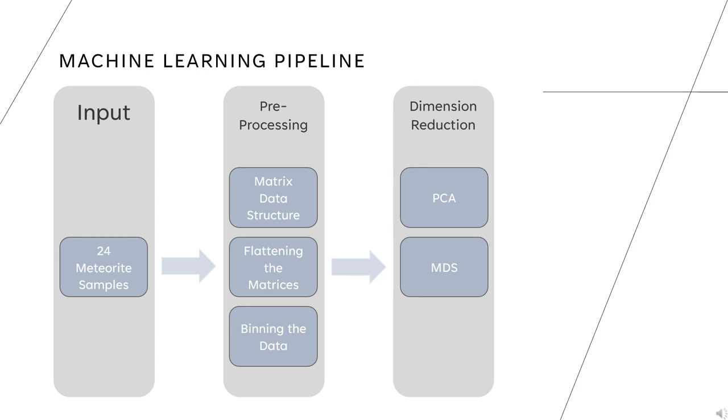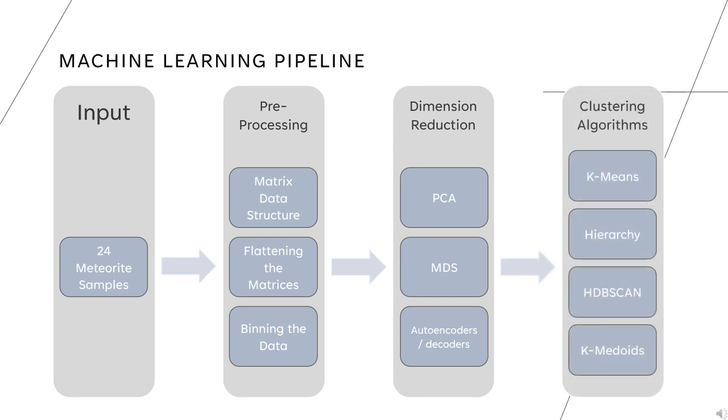MDS, or multi-dimensional scaling, focuses on retaining pairwise distances, or dissimilarities between pairs of features. And autoencoders and decoders focus on retaining the important features through data compression. And through each of these reduction techniques, we applied four clustering algorithms.